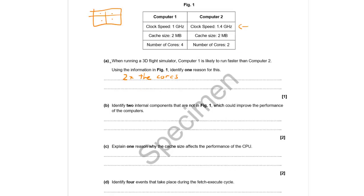We now need to give two internal components not in the table that can improve performance. Identify questions are as simple as just writing them down. You could increase RAM, add a GPU (graphics card), or switch from a hard disk to an SSD. It's a generic question just making sure you know more than three types of hardware.